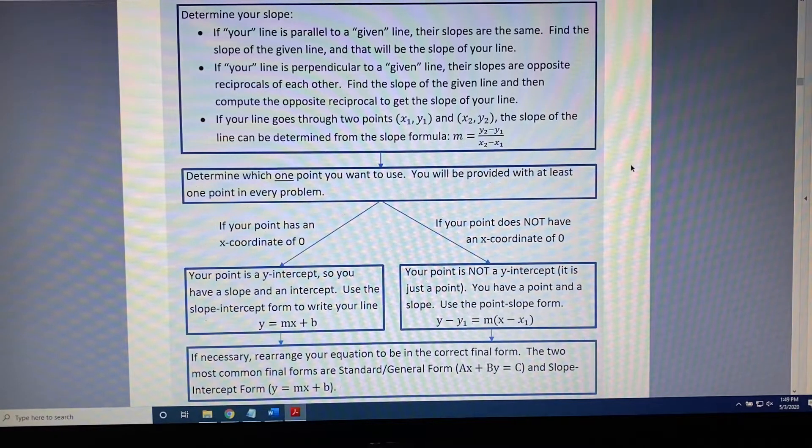Let's go through the flowchart together. First box, determine your slope. If your line should be parallel to some given line, then they must have the same slope. So, find the slope of the given line, and that will be the slope of your line.